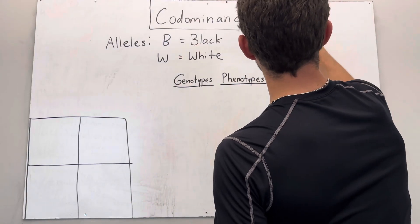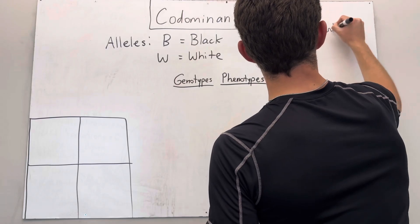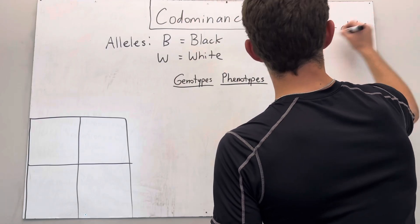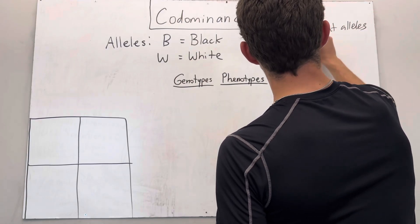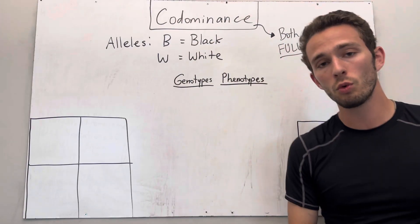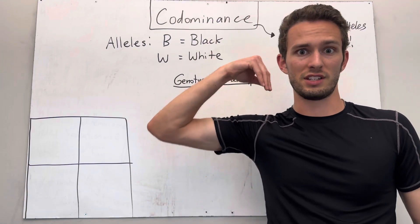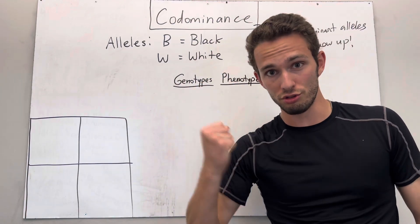I'm going to write that down. Both dominant alleles fully show up. So in other words, if you have that allele, whether it's for like a color or for a height, it is going to show up.